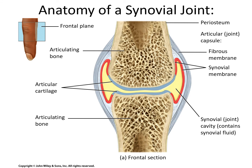Here we have a typical synovial joint — the articulation between two phalanges. At the end of each bone on the articular surface we have articular cartilage made of hyaline cartilage. Towards the outside of the synovial cavity we have the synovial membrane, the epithelial layer that secretes the synovial fluid. Around that we have the fibrous membrane, which is continuous with the periosteum so that together they form a sealed capsule.